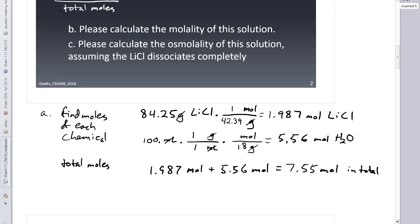1.987 moles of lithium chloride plus 5.56 moles of water. My sig figs will now get cut to the .01's place, but that's okay. 7.55 moles of everything total. In total. The chemical I was interested in was lithium chloride. So I'm going to set up the fraction and divide. I had lithium chloride was 1.987 moles of lithium chloride divided by the total moles.